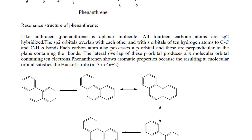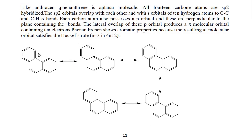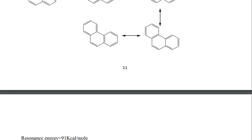Phenanthrene, like anthracene, is a planar molecule. All 14 carbon atoms are sp2 hybridized. The sp2 orbitals overlap with each other and with the s orbitals of the 10 hydrogen atoms, forming C–C and C–H sigma bonds. Each carbon atom also possesses a p orbital perpendicular to the plane. The lateral overlap of these p orbitals produces pi molecular orbitals containing 14 pi electrons. Phenanthrene shows aromatic properties because the resulting pi molecular orbital satisfies Hückel's rule. The resonance energy of phenanthrene is 91 kcal per mole.